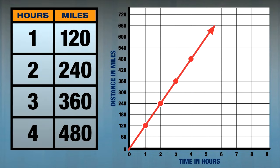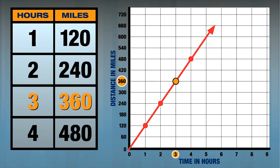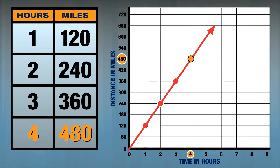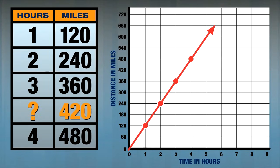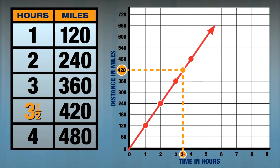Back to our problem: my hometown is 420 miles away, and the helicopter travels at an average speed of 120 miles per hour. How long will it take? The table and graph show it takes three hours for 360 miles and four hours for 480 miles. If you find 420 on the graph, it corresponds with three and a half hours. 420 is 60 miles more than 360, and at 120 miles per hour, the helicopter travels 60 miles in half an hour — so three and a half hours makes sense.